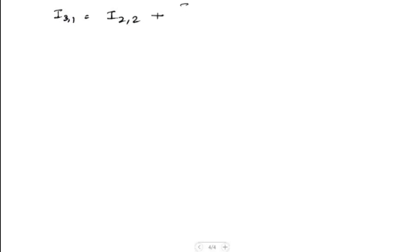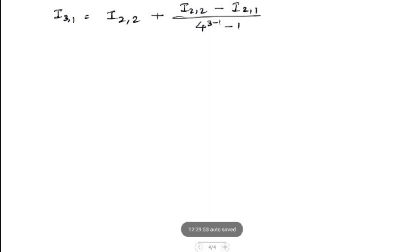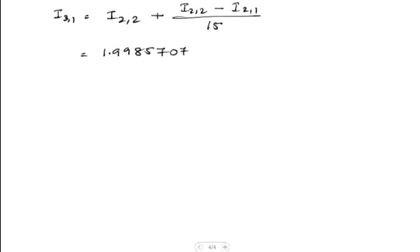Now let's calculate what the question asked for: i3,1. The formula is i2,2 plus (i2,2 minus i2,1) divided by (4 to the power k minus 1 minus 1). Here k equals 3, so 4 to the power 2 is 16, and 16 minus 1 is 15. Using the values, the answer is 1.998570734, which is the final answer to this question using Romberg integration.